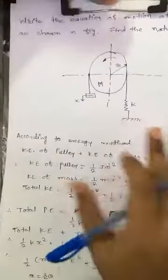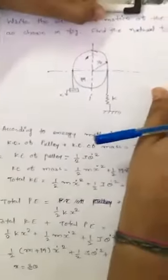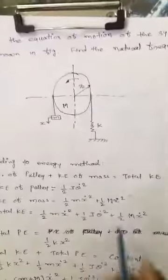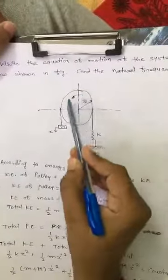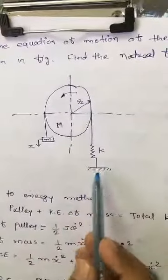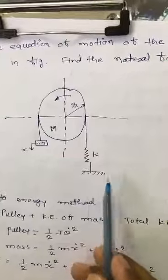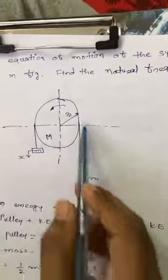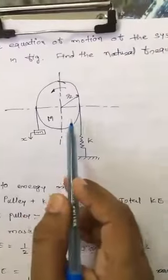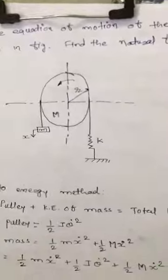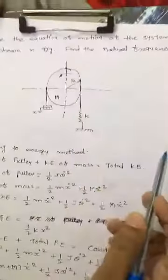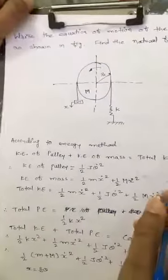Now I will explain one example that has appeared many times in university examinations: find the natural frequency of a vibratory body shown in a figure. As shown in the figure, here is one pulley. Write the equation of motion of the system as shown in the figure and find the natural frequency. The pulley is wound with one string; one end of the string is fixed, and at that fixed end there is a spring attached. At the other end of the string there is a mass m. The mass of the pulley is M, the radius of the pulley is r, and x displacement is given to mass m.